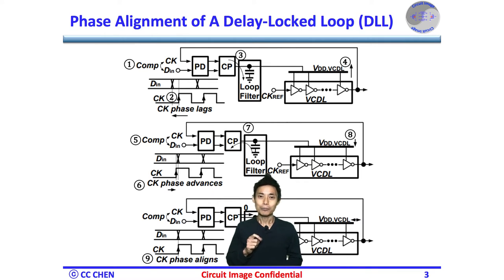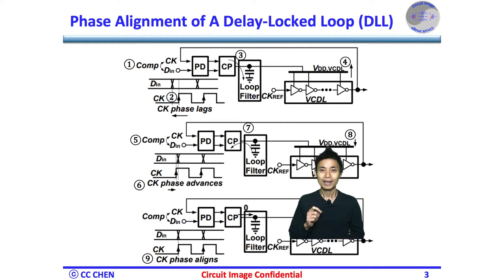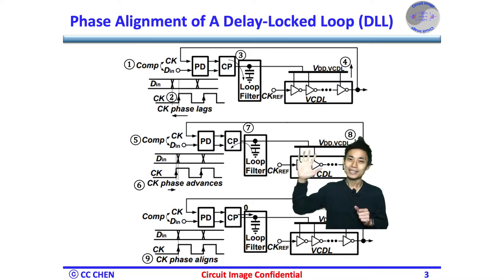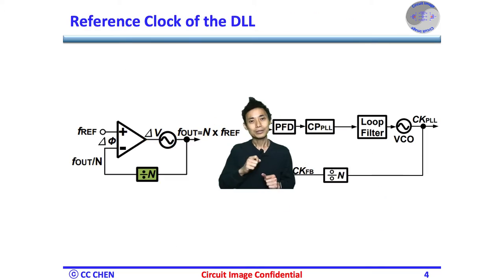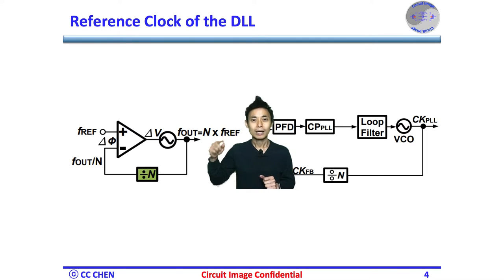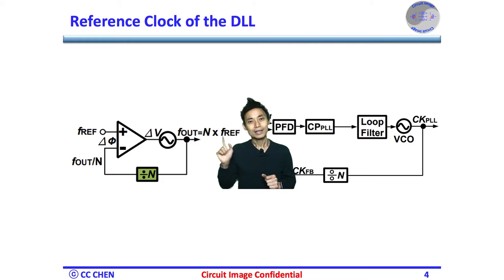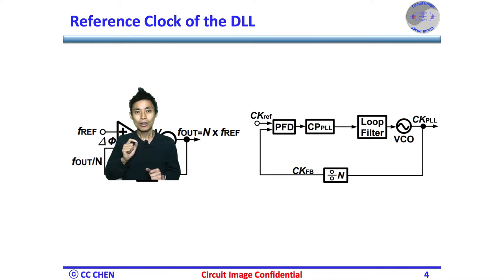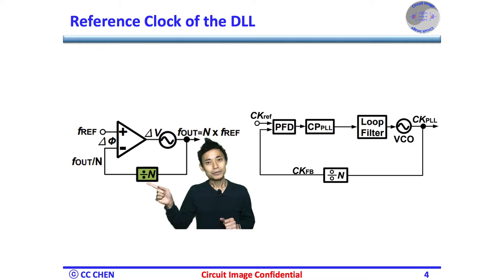After understanding how the DLL's phase alignment operates, any idea where the reference clock came from? The PLL must generate the output clock through a multiplication. As we discussed in the white timing or PLL video, the SoC system may not have such a high-frequency clock source up to the bitrate, which may need to be generated through a low-frequency reference clock and a negative feedback loop including the feedback frequency divider.